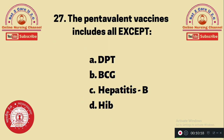Question 27: The pentavalent vaccine includes all except — A. DPT, B. BCG, C. Hepatitis B, D. Hib. BCG is not included in the pentavalent vaccine because it is given at birth. The pentavalent vaccine includes DPT, Hepatitis B, and Haemophilus influenzae type B (Hib). The answer is B.